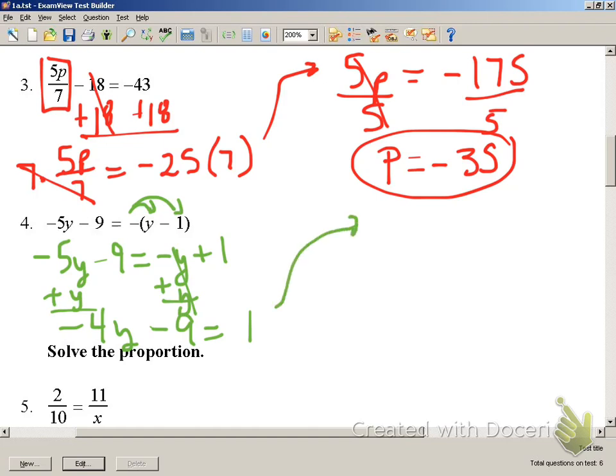That is a negative 4Y minus 9 is equal to 1. I need to add 9 to both sides. So if I add 9 to both sides, I have 1 plus 9, which gives us 10.